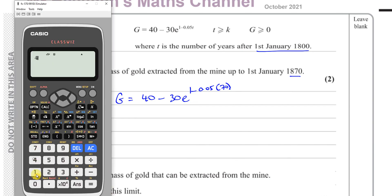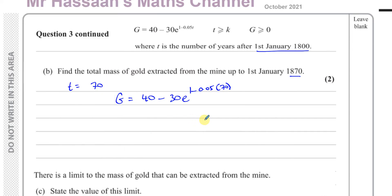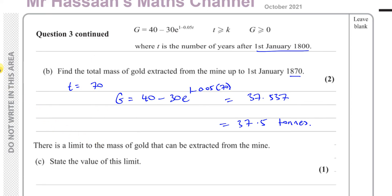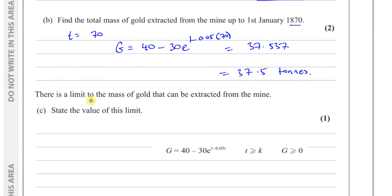So you have 40 minus 30 times e to the power of 1 minus 0.05 times 70. And that should give us the answer, which is 37.537. That's 37.5. Now we have to write the units here, tons, because it says find the mass. It doesn't just say find the value of G, it says find the total mass. So that's part B.